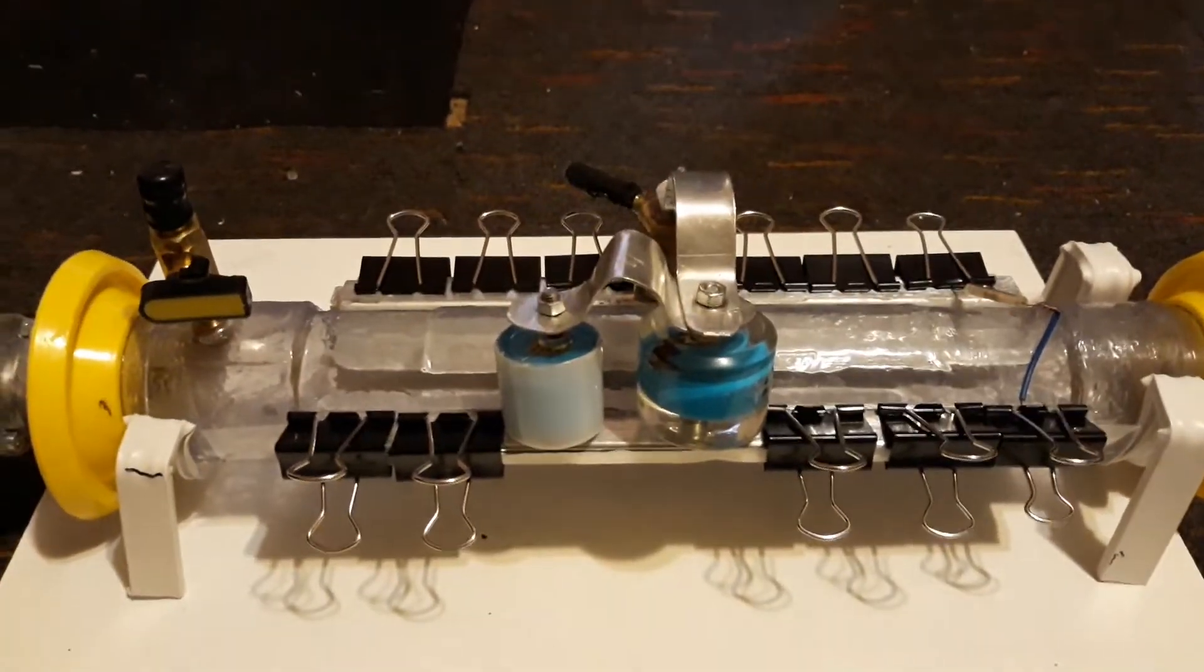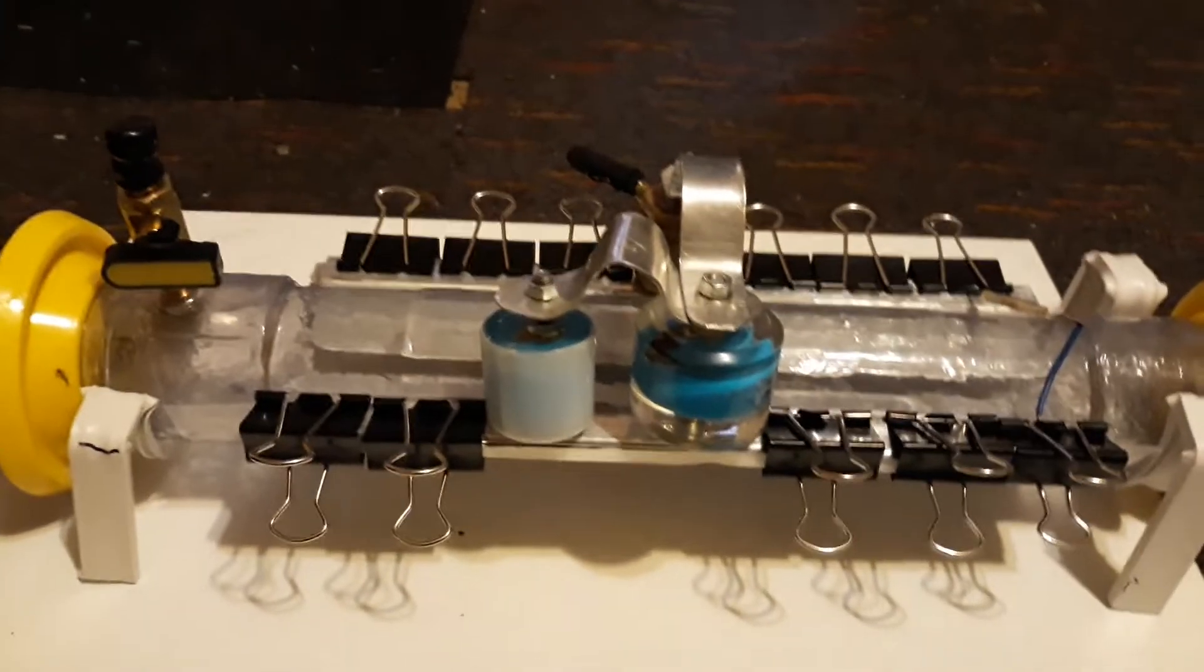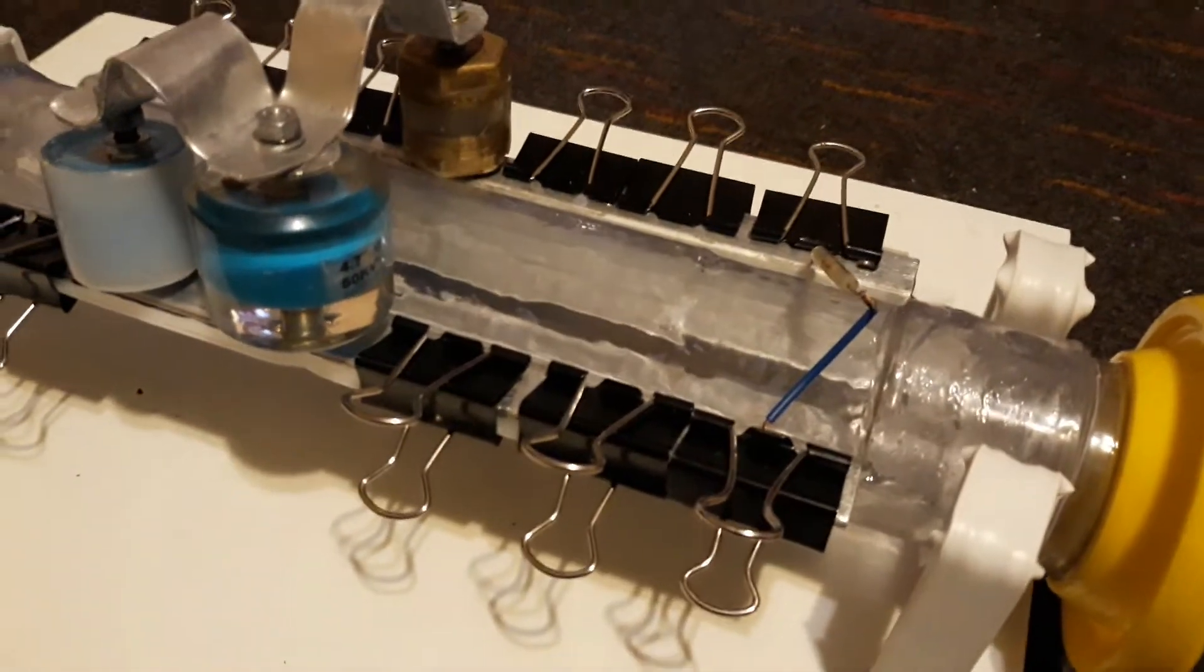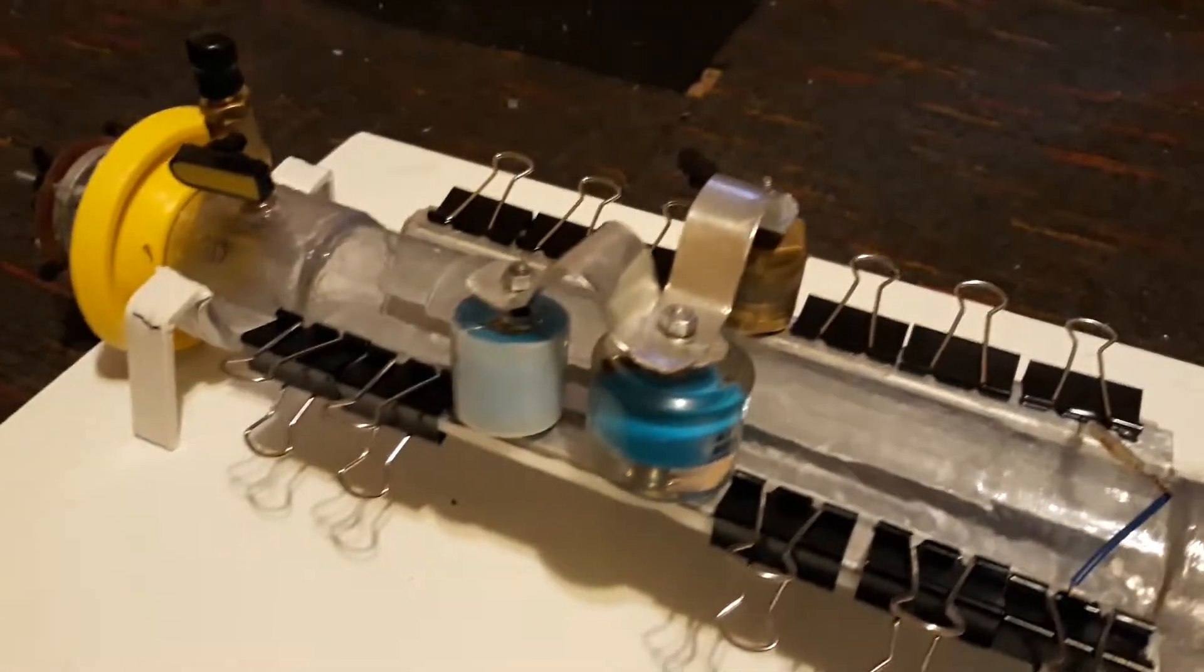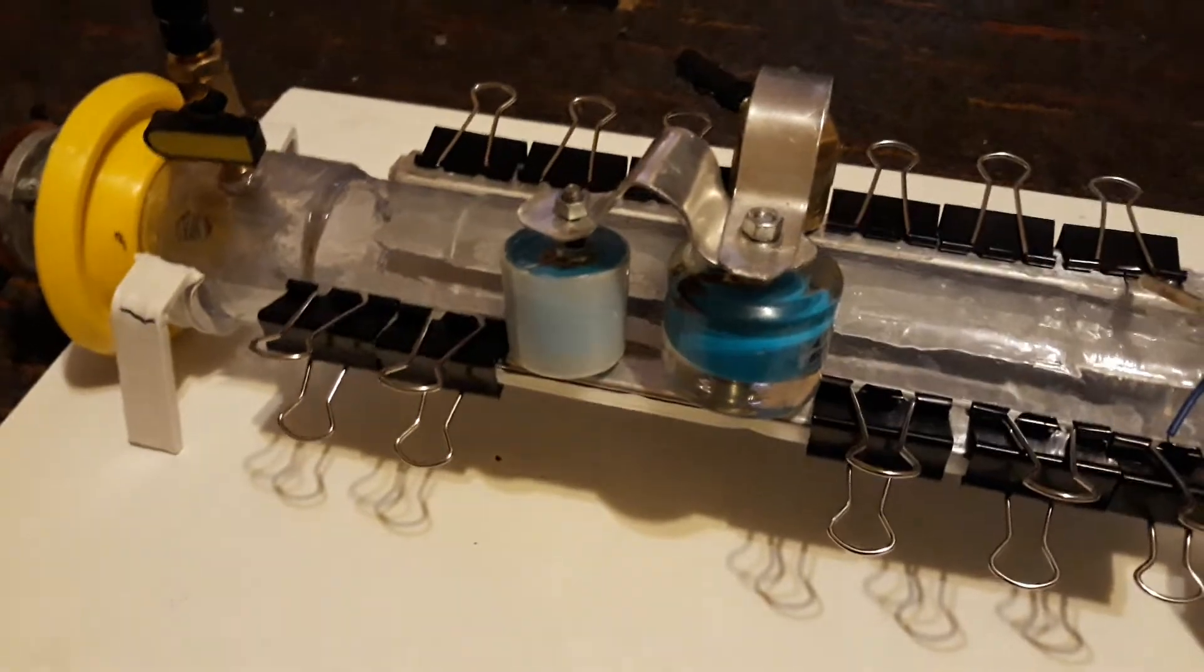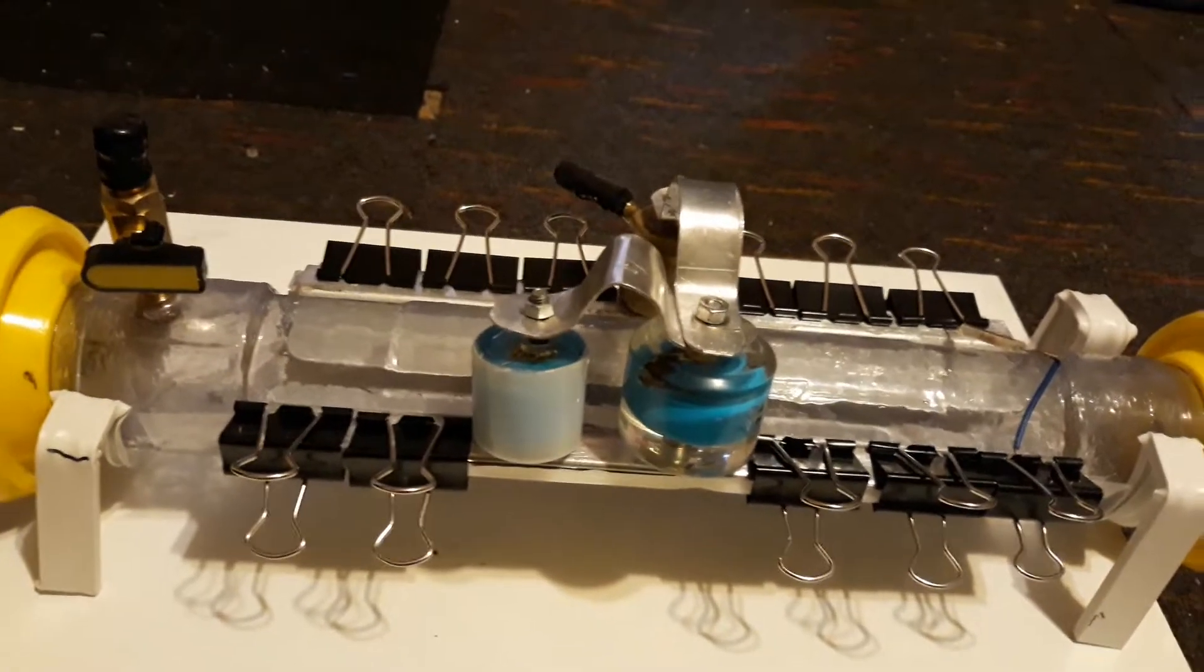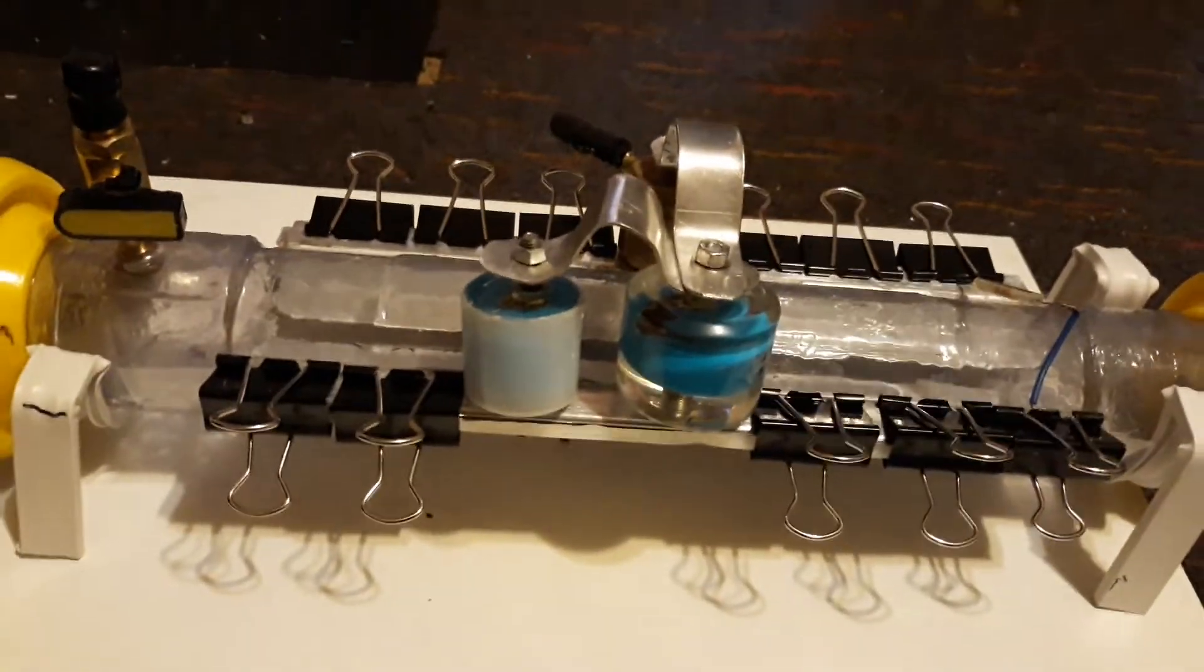Hello, this is my first low-pressure nitrogen laser. It's built out of a polycarbonate tube. The configuration is a charge transfer circuit in which the dumpster capacitors are those two in parallel, totaling five nanofarads.